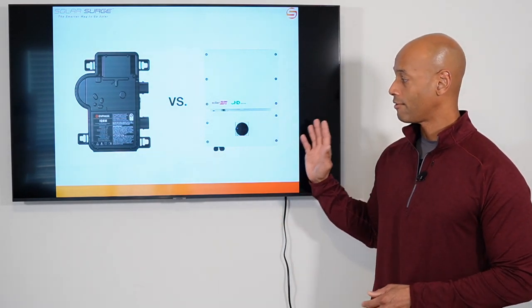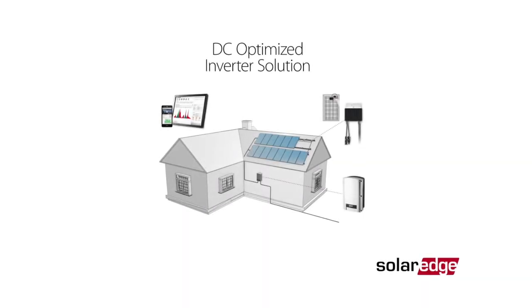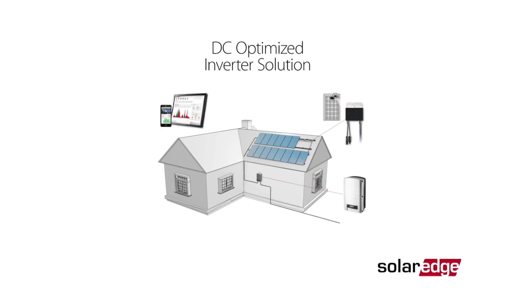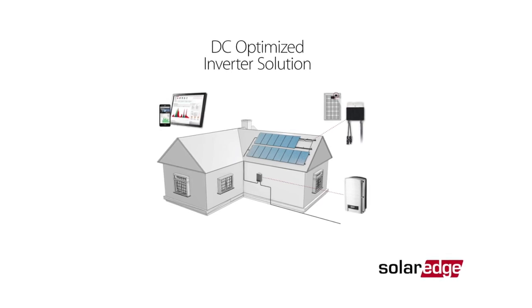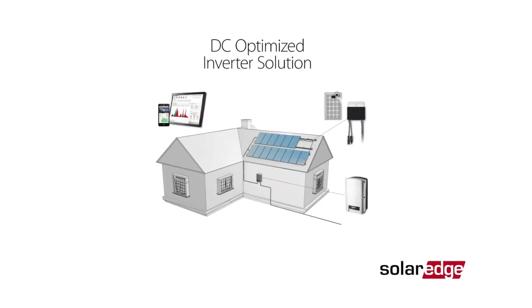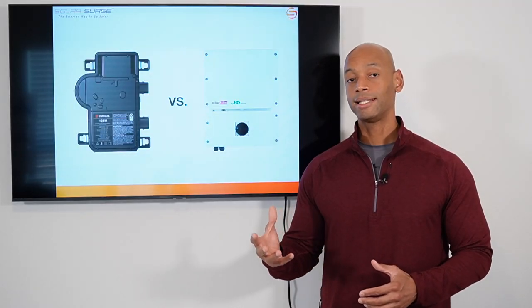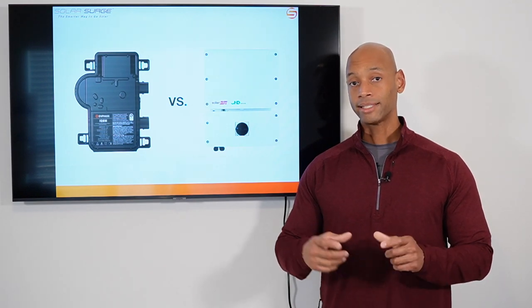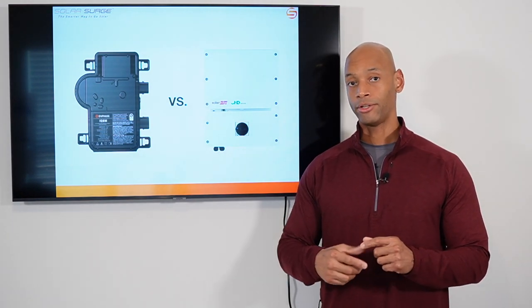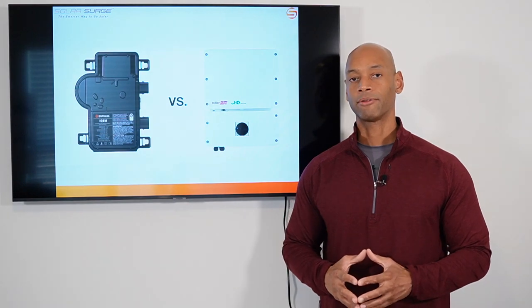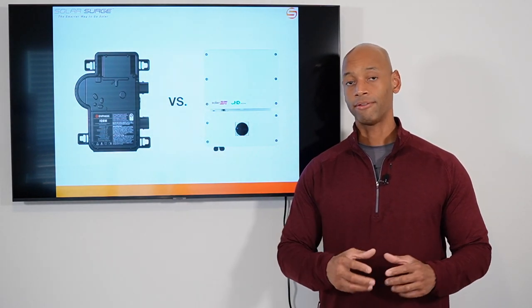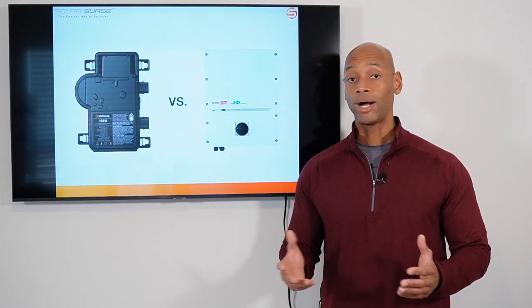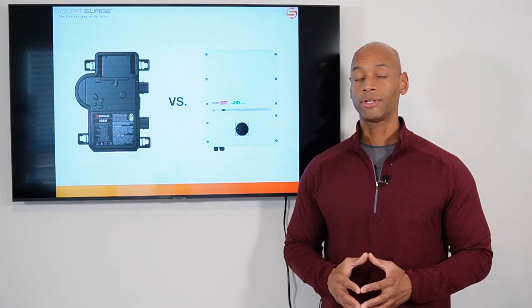Now about four years later, SolarEdge came on the scene with the DC optimizer solution. What the DC optimizer solution did was it basically put a DC optimizer device on each individual solar panel. So basically each panel had a unique serial number and you could track performance coming from each optimizer unit and thereby by each panel. But the wiring was as simple as the old string inverters.